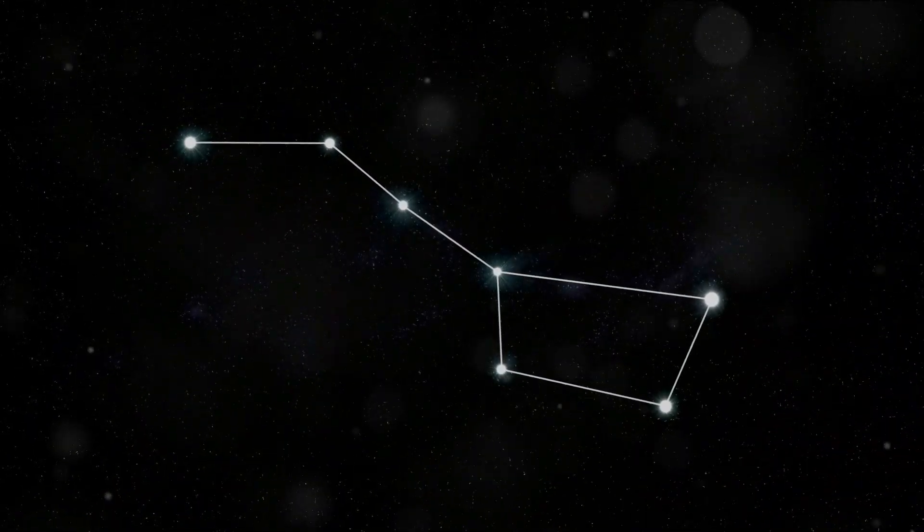Moving on to question 2. Can you name the biggest star constellation? Is it A, Orion, B, Ursa Major, or C, Pegasus?